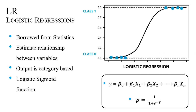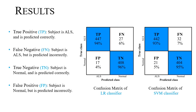Logistic regression is a technique borrowed by machine learning from the field of statistics, and it describes and estimates the relation between a dependent binary variable and other independent variables. Unlike linear regression, where the outputs are continuous numeric values, the output of logistic regression is categorical in nature. Logistic regression transforms its output using the logistic sigmoid function to return a probability value, which can then be mapped to two or more discrete classes.